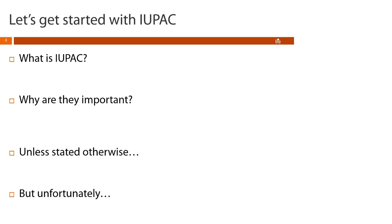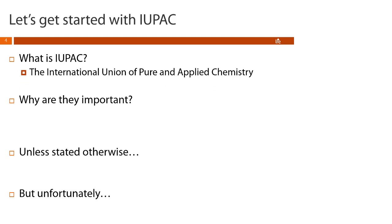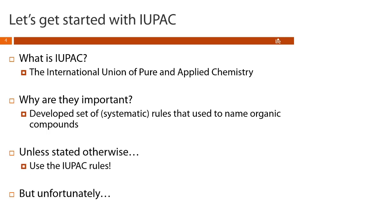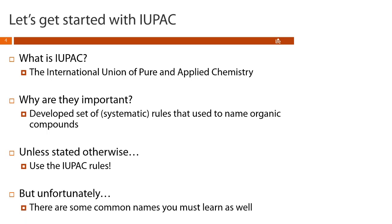Let's get started with IUPAC. IUPAC is the International Union of Pure and Applied Chemistry, and what they've done is develop a set of systematic rules that we use to name organic compounds. Unless you're told otherwise, use the IUPAC rules for naming — but since most of you want to be nurses, there are some common names you'll have to learn as well.